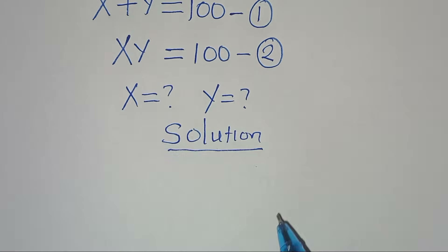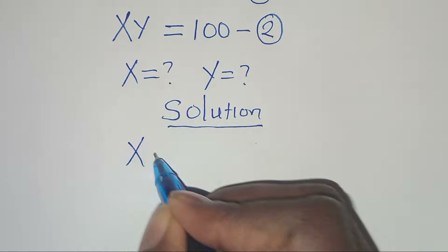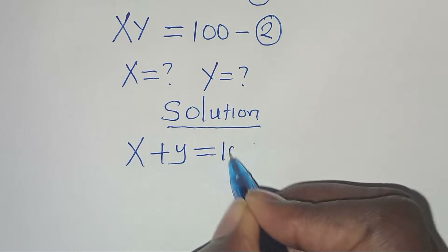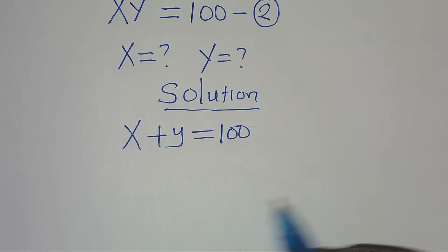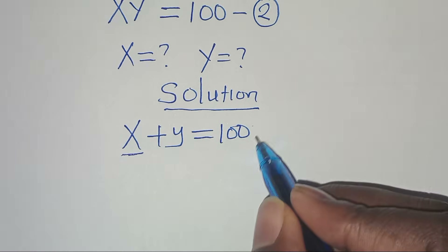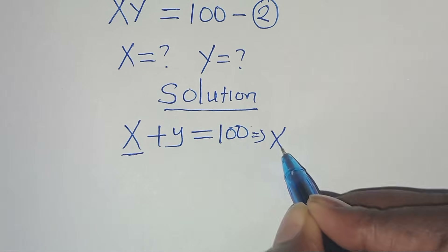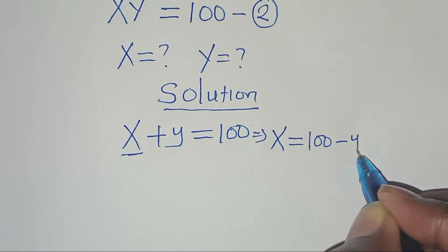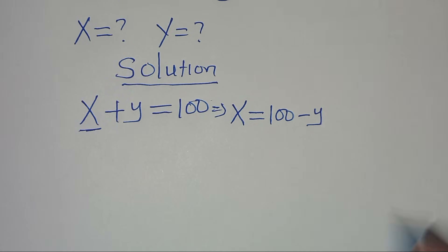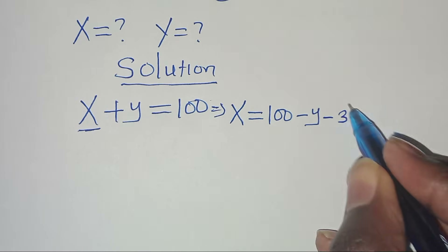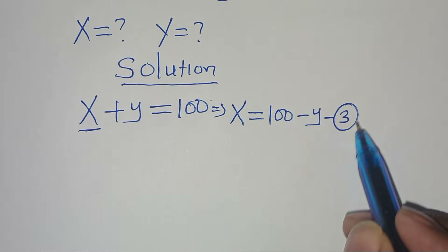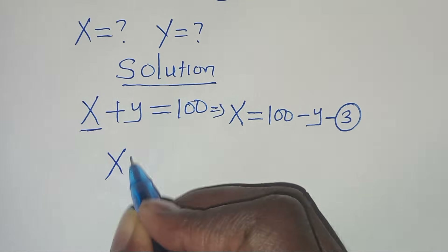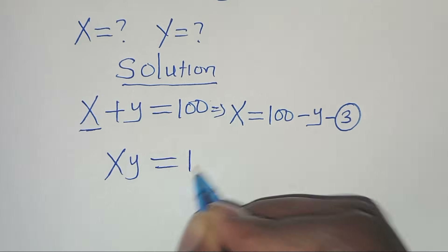From equation 1, which is x plus y equals 100, let's make x the subject of the formula. We get x equals 100 minus y — let's call this equation 3. Now let's substitute equation 3 into equation 2, which is x times y equals 100.